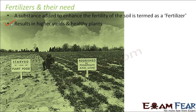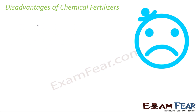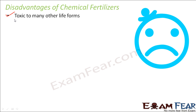There are certain disadvantages associated with chemical fertilizers. They are made up of harmful chemicals which can be harmful for other life forms. Even though they increase soil fertility, they can harm living organisms inside the soil, such as earthworms and small insects. Toxic material in crops can cause harm to animals that eat those crops, and it can cause imbalance in the soil pH — disturbing the acidity or basic nature of the soil.